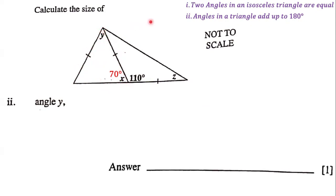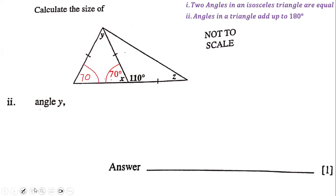Since we're dealing with an isosceles triangle, two angles in that triangle are equal. So not only are the sides equal, but the base angles are equal as well. That means if this angle is 70 degrees, then this angle right here must also be 70 degrees, because in an isosceles triangle the base angles are the same. So this is 70 and this is 70.